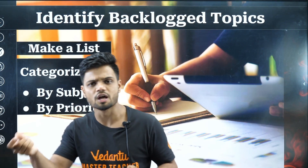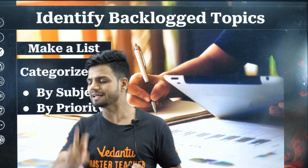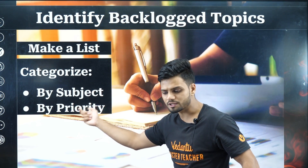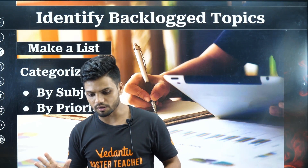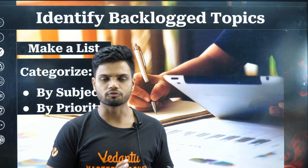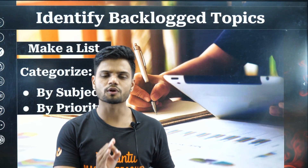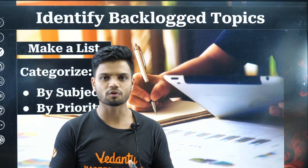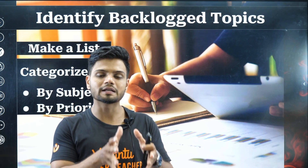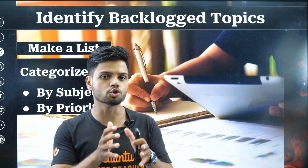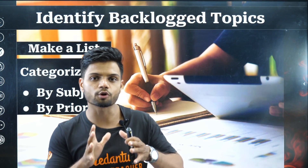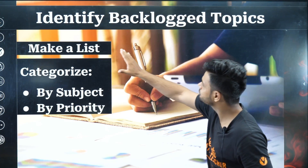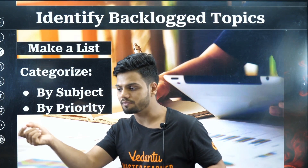The second thing is to prioritize by subject, based on weightage. For example, if both living world and plant physiology are backlogs for you, you should provide more importance to plant physiology, since it has higher weightage. Whichever chapter or unit has higher weightage, show priority for that. This is the first step — identifying the backlogs and accepting where you need to improve.